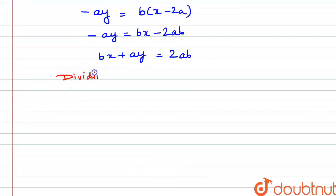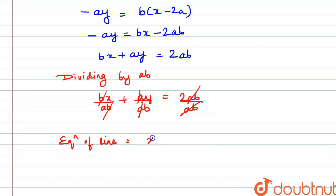Now if we divide this whole equation by ab, dividing this equation by ab, we get bx by ab plus ay by ab is equal to 2ab divided by ab. So here ab and ab gets cancelled out, here a and a gets cancelled out and here b and b gets cancelled out. So here we get our equation of line segment that is x by a plus y by b is equal to 2.